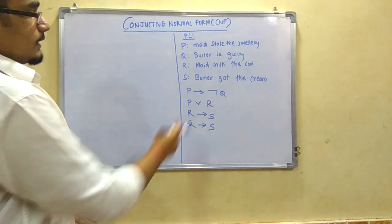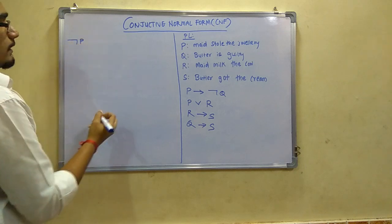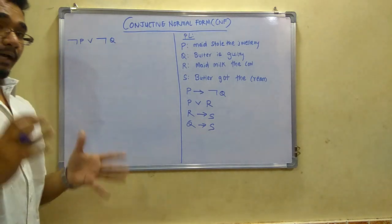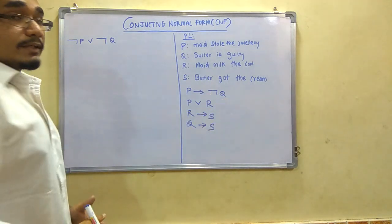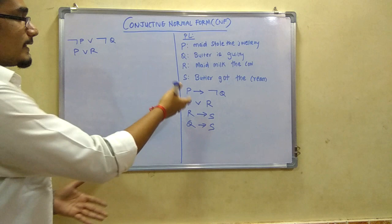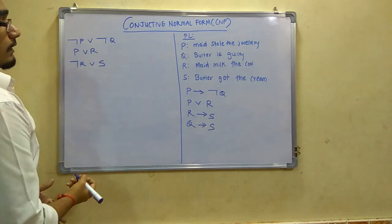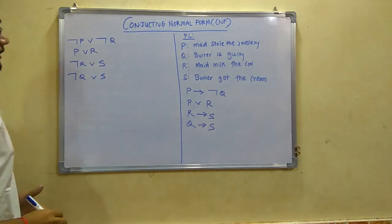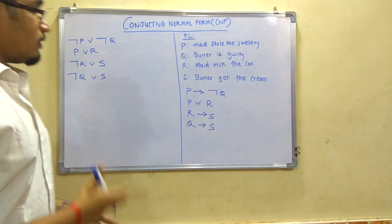Now we eliminate the arrows. For the first statement P → ¬Q, we negate P and write: ¬P ∨ ¬Q. The second statement P ∨ R has no arrow so we write it as it is: P ∨ R. For R → S, we get ¬R ∨ S. For Q → S, we get ¬Q ∨ S. The conclusion Q → S becomes our target to prove.